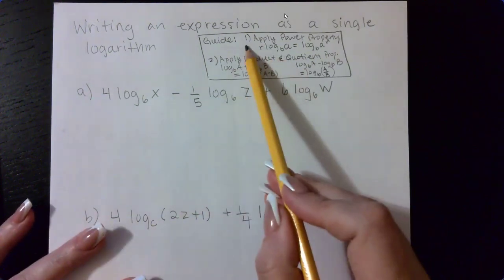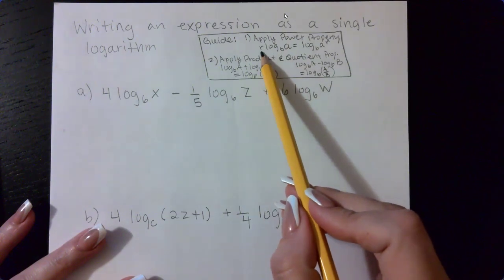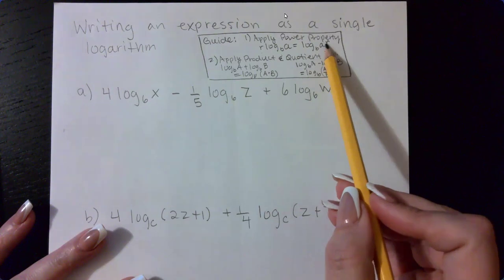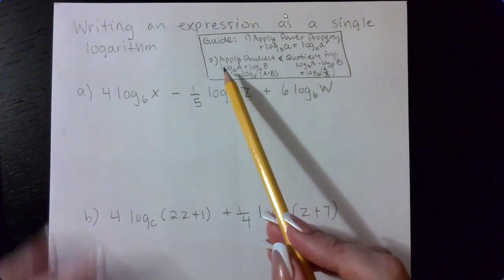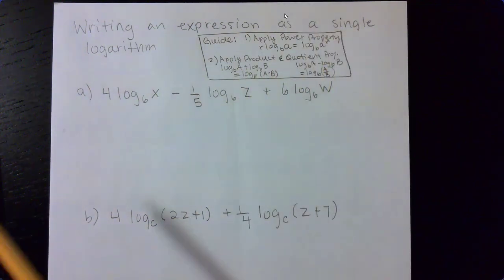The guide here is to first apply the power property, which means if you have a coefficient of your logarithmic expression, it does become the exponent of the argument. Then after doing that, you will apply the product or quotient rules, and you can do these simultaneously at the same time.